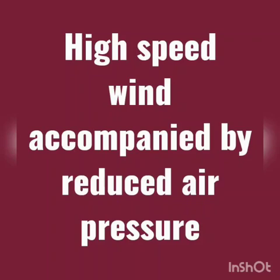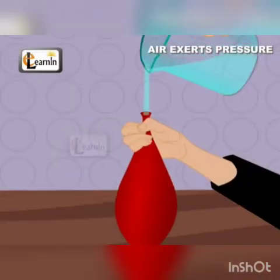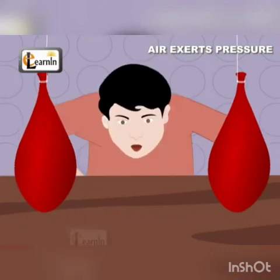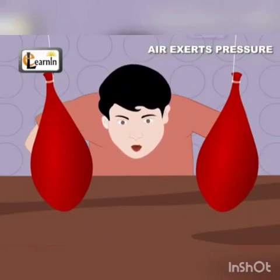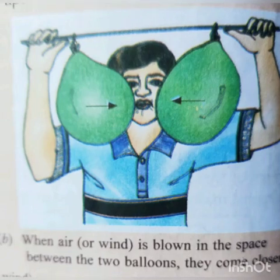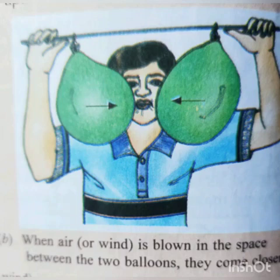High-speed wind is accompanied by reduced air pressure. We will discuss one experiment related to this. Take two balloons filled with water and tied with string, maintaining a distance of 10 centimeters between them. Blow air with your mouth between the balloons — they move slightly towards each other. The wind blown between the balloons reduces the air pressure in that area. This activity shows that fast-moving air creates a region of low air pressure.